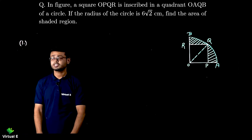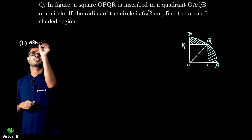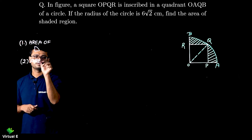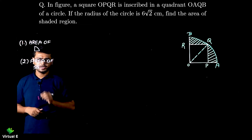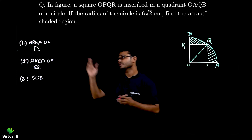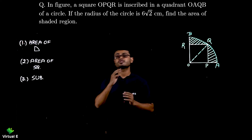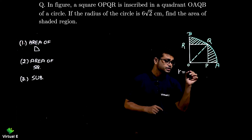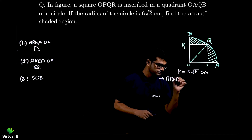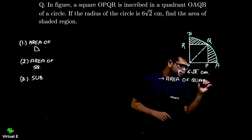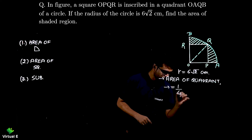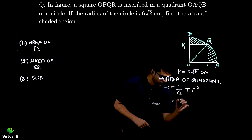Let's frame the steps: Step 1 - area of quadrant, Step 2 - area of square, Step 3 - subtract to get the area of the shaded region. Starting with Step 1, the radius is given as 6√2. The formula for the area of a quadrant is (1/4)πr².